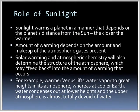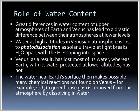Sunlight warms a planet depending on its distance from the Sun — the closer, the warmer. The amount of warming depends on the amount and makeup of atmospheric gases. Solar warming and atmospheric chemistry determine the structure of the atmosphere, which feeds back into the amount of warming. For example, warmer Venus lifts water vapor to great heights in its atmosphere, whereas on cooler Earth, water condenses out at lower heights and the upper atmosphere is almost totally devoid of water. The great difference in water content of the upper atmospheres of Earth and Venus has led to drastic differences between their atmospheres at lower levels. Water at high altitudes in the Venusian atmosphere is lost because of photodissociation — solar UV light breaks H₂O and the hydrogen escapes into space — so Venus has lost most of its water, whereas Earth, with its water protected at lower altitudes, has not.